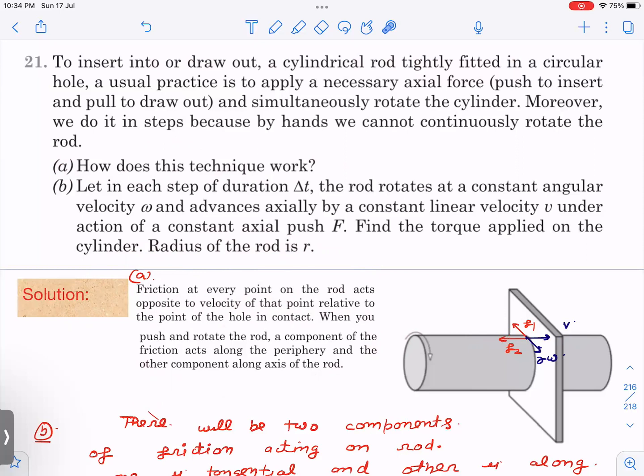Now, normal is the same only. But when you are rotating also, at this point there are two velocities. You can see this diagram, there is one axial velocity. When it is rotating this way, then there is r omega also. So it is kinetic friction and has to act opposite to the net velocity.